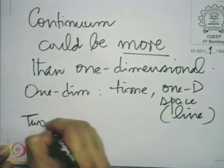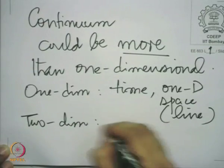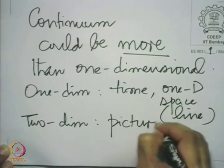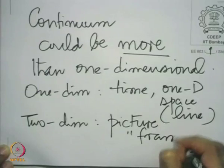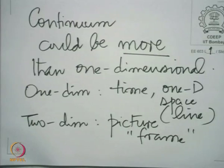It could be two-dimensional — for example, you can have a picture frame. The space on which you put a picture is a two-dimensional continuum. In fact it can be three-dimensional: all of us exist in three-dimensional space. It is now better known that we may have more than three dimensions, but we definitely know we are at least three-dimensional. So continua can be more than one-dimensional — could be two-dimensional, three-dimensional, or multi-dimensional.